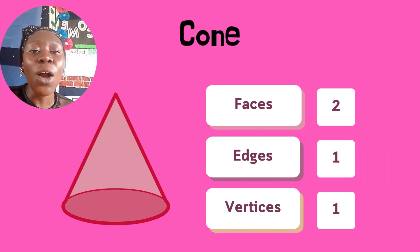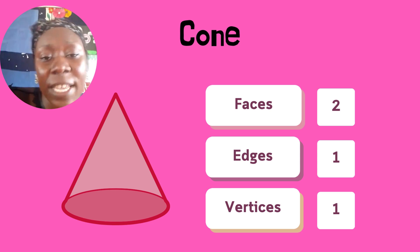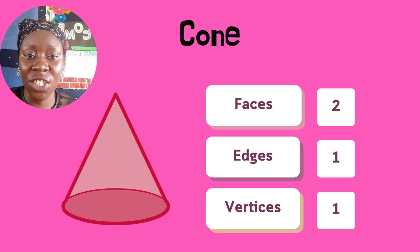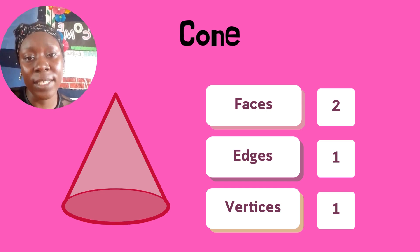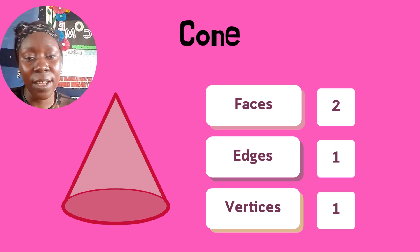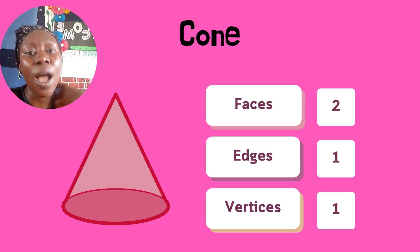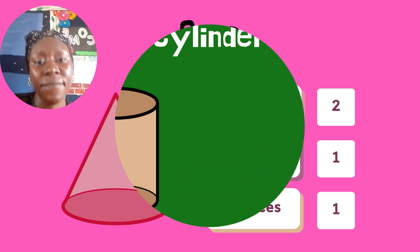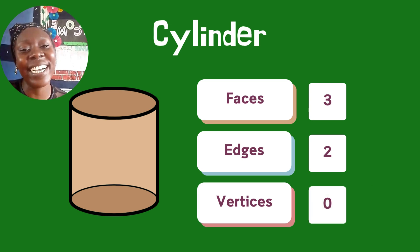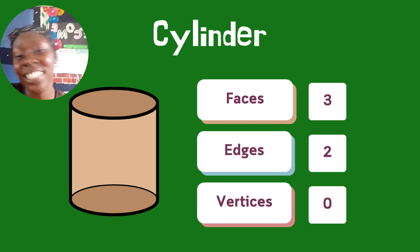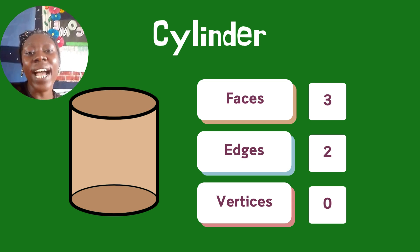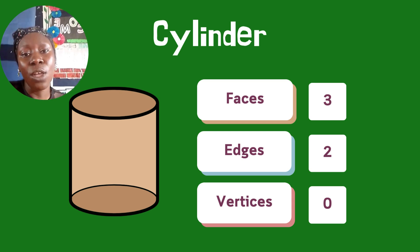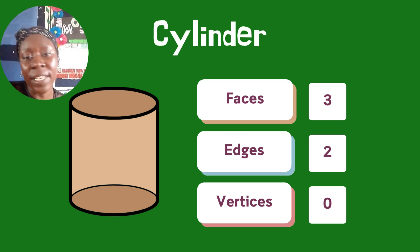The cone has two faces, one edge, and one vertex. The cylinder — when you see this kind of shape, that is a cylinder. A cylinder has three faces, two edges, and zero vertices.